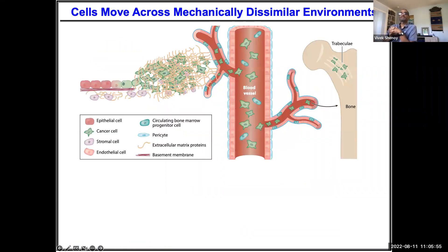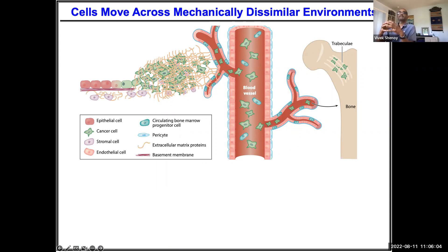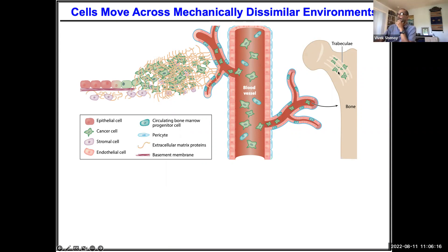That's certainly important in the context of cancer. A triple negative breast cancer cell starts from an epithelial cell, which can then invade into the extracellular matrix, go to the blood vessel, and eventually go to the bone. So the same cell is now seeing all these different mechanical environments.